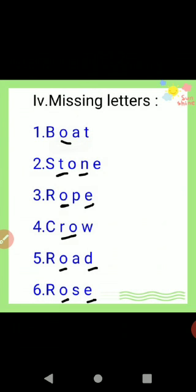Fourth — crow, C-R-O-W, crow. Fifth — road, R-O-A-D, road. Sixth — rose, R-O-S-E, rose. Once again I read: first — boat, second — stone, third — rope, fourth — crow, fifth — road, sixth — rose.